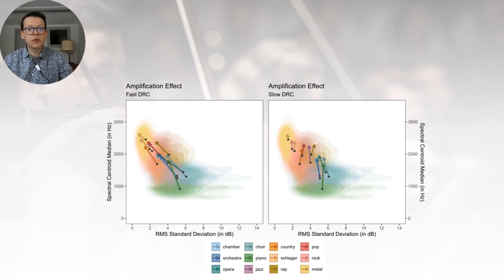The median effect of amplification with fast and slow dynamic range compression is shown here by genre. This direct comparison illustrates the fact that fast-acting compression reduces the dynamic range compared to slow-acting compression, and that the magnitude of changes in spectral centroid interact with music genre. This figure exposes the interaction between amplification and music genre.